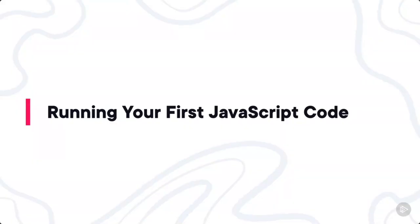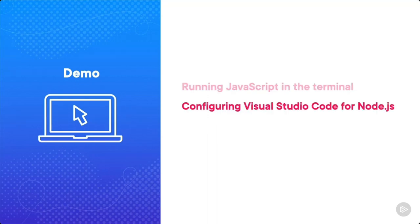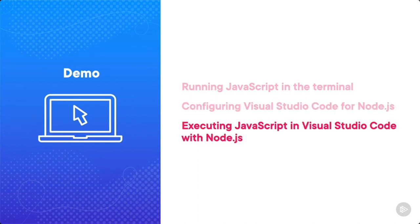The moment has arrived — in this clip you're going to be running your first JavaScript code. First, we're going to run JavaScript in the terminal; we won't even start in VS Code. Once we work through that, we'll configure Visual Studio Code for Node.js. And once we have that in place, we will execute JavaScript code within Visual Studio Code with Node.js. Let's dive in.